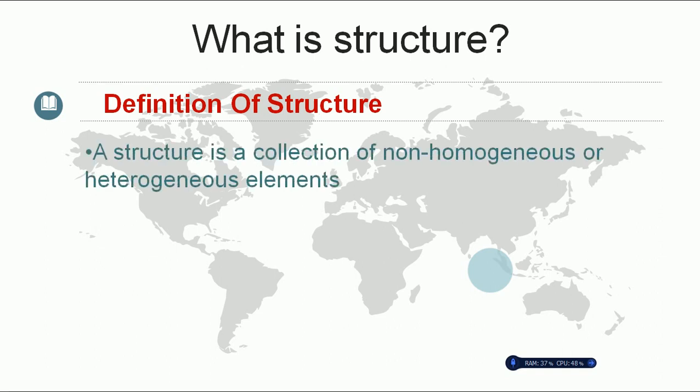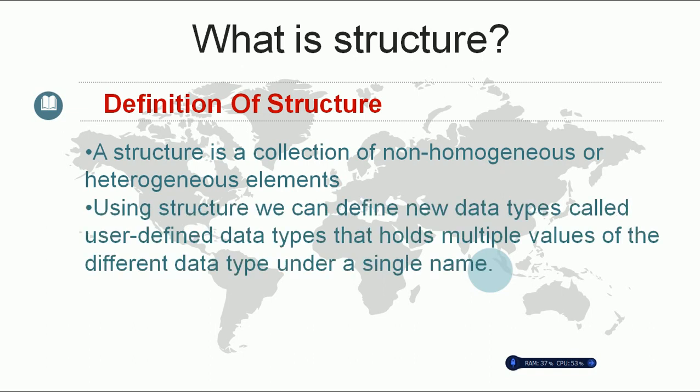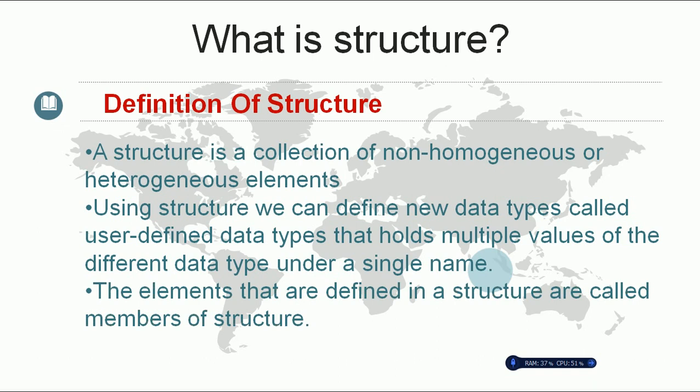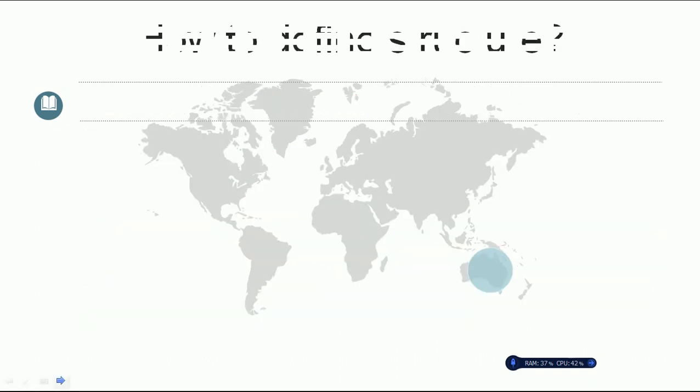A structure is a collection of non-homogeneous or heterogeneous elements. Using a structure, we can define a new data type called a user-defined data type that can hold multiple values of different data types under a single name. The elements which are defined in a structure are called members of a structure.